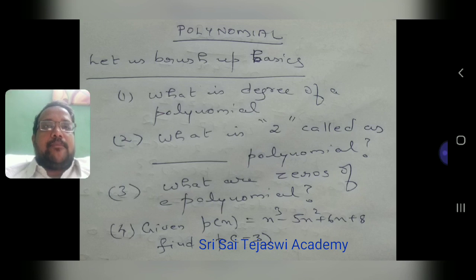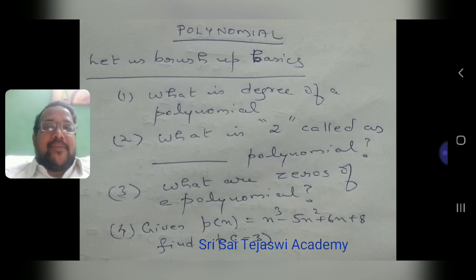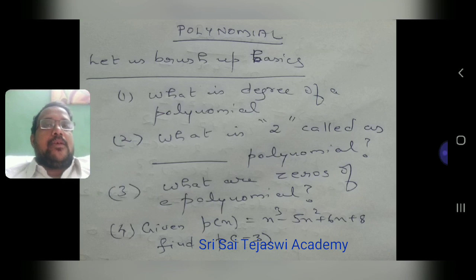What is the first question? What is the degree of a polynomial? The degree of a polynomial is the highest power. Suppose x cube plus 3x squared plus 5x plus 7 — what is the degree? 3.